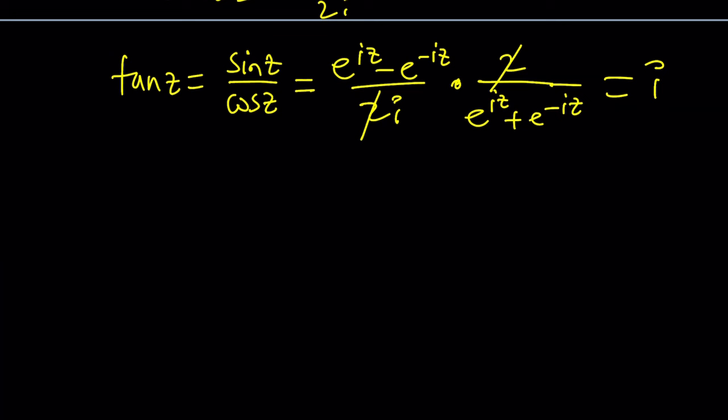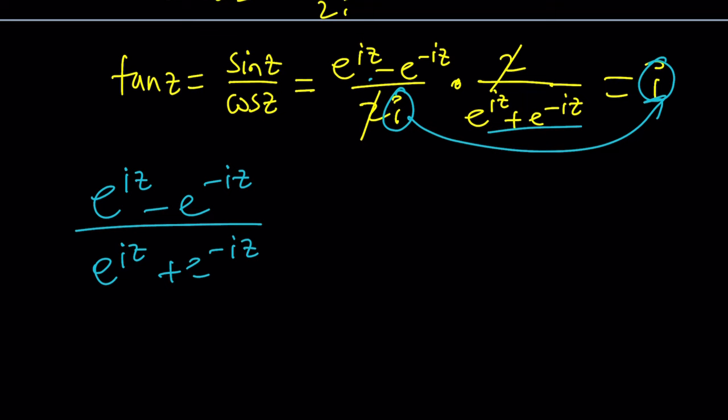And I want to do this first because this is fun. I times i, cross multiply these only and leave these here. That gives you e to the iz minus e to the negative iz divided by e to the iz plus e to the negative iz equals i times i, i squared, which is negative one. Awesome.